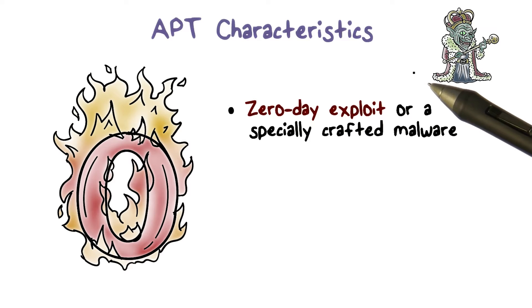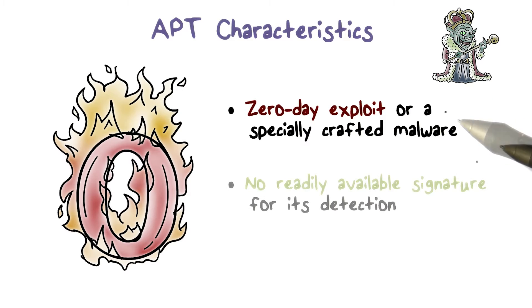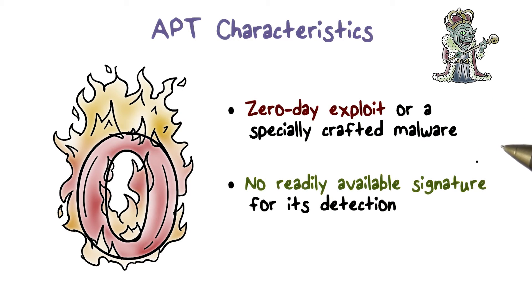The most dangerous and advanced APTs are those that use a zero-day exploit or a specially crafted malware. A zero-day attack exploits a previously unknown vulnerability, and therefore there's no patch or fix for the vulnerable system. Most likely, there's no prevention or detection signature for the attack — meaning a zero-day exploit will succeed and go undetected.